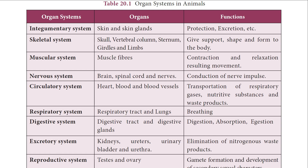We have the integumentary system, which consists of the organs skin and skin glands like sebaceous glands and sweat glands. Their function is to protect and excrete nitrogenous waste. The second system is the skeletal system. It consists of the skull in our head region, vertebral column, sternum — the breast bone — the girdles where the limbs are attached, and our limb bones. They give support, shape, and form to our body.